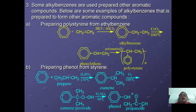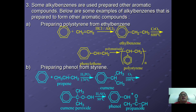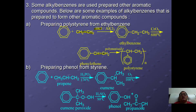Some alkylbenzenes are prepared from other aromatic compounds. For example, in the preparation of styrene, benzene first reacts with ethylene in the presence of a Brønsted acid catalyst to produce ethylbenzene. Ethylbenzene is then heated with chromium(VI) oxide at a very high temperature of 600°C and dehydrogenated to form a vinyl group, giving phenylethene, also known as styrene, which can be polymerized to form polystyrene.